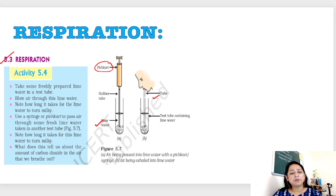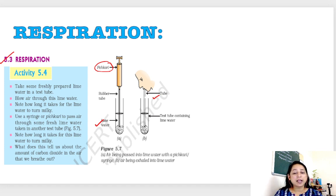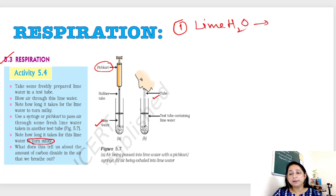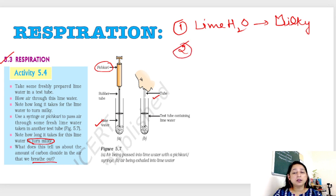The activity says: take freshly prepared lime water in test tubes, blow air through it — how long does it take for the lime water to turn milky? Use a syringe to pass air to one test tube of fresh lime water, and blow directly through the mouth into the other. Basically, the first question is that the lime water has turned milky. The second thing they expect is to compare what happens in both test tubes — what does it tell us about the amount of carbon dioxide in the air we breathe out?